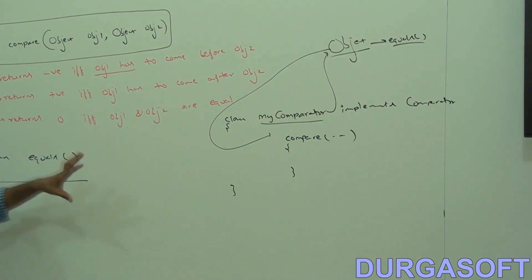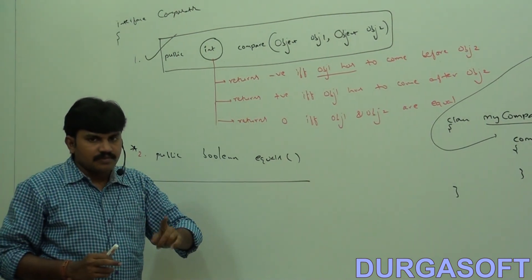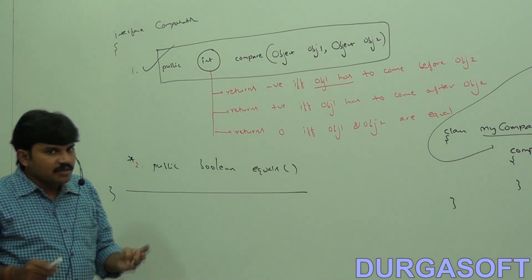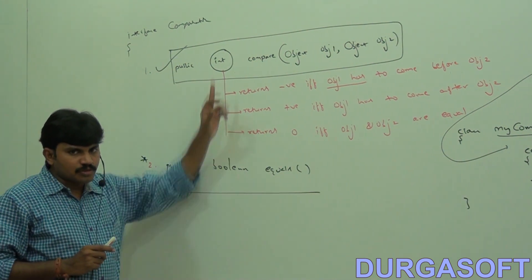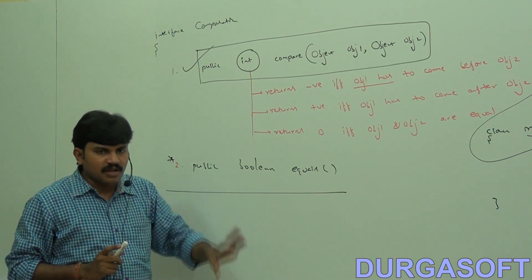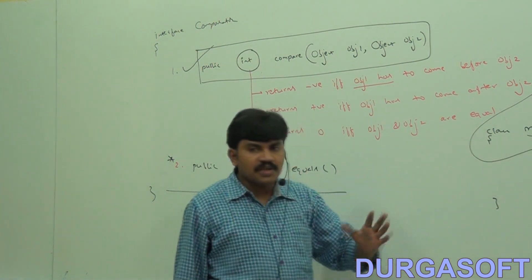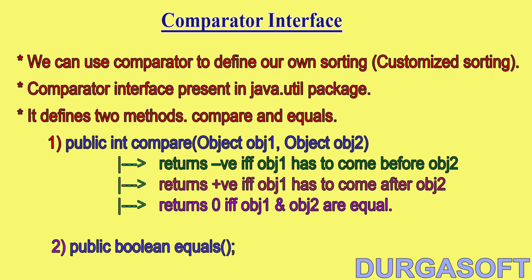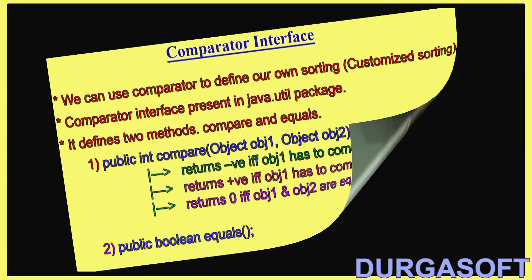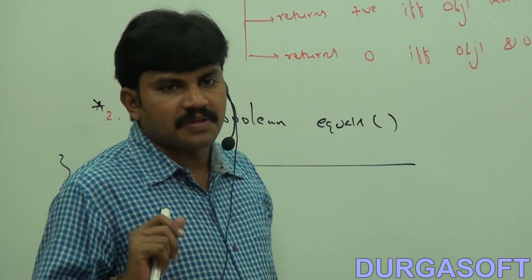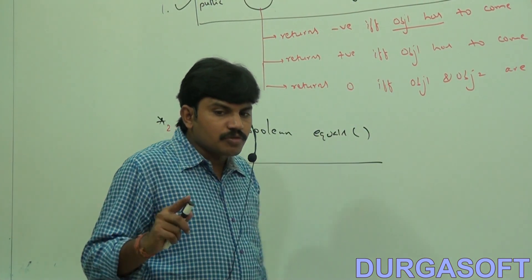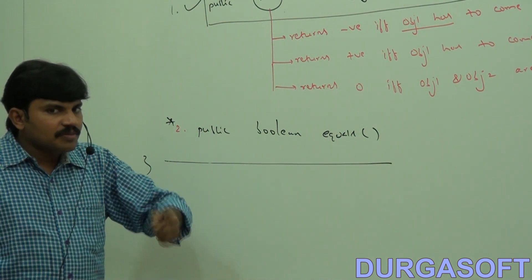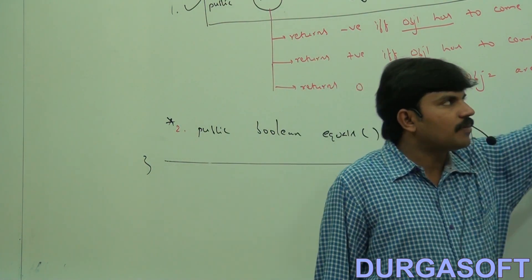To summarize: when should we go for Comparator? To define our own customized sorting. Comparator interface is present in java.util package. It contains two methods — compare and equals. Whenever we are implementing the Comparator interface, compulsory we should provide implementation only for the compare method. The equals method implementation is optional because it is already available to our class from Object through inheritance.